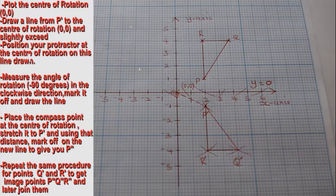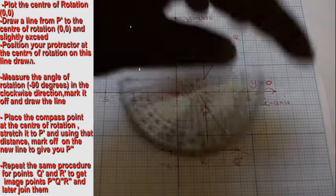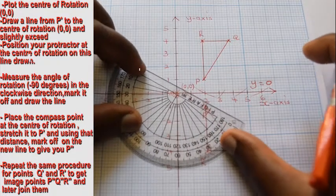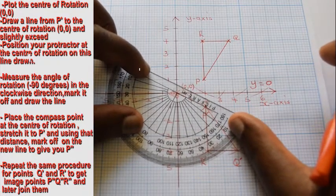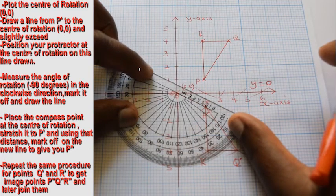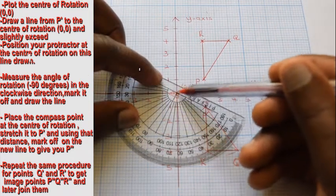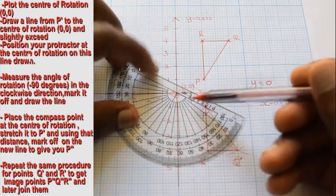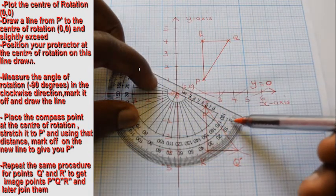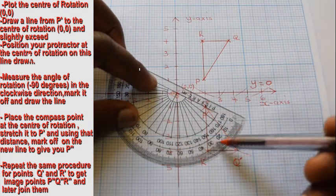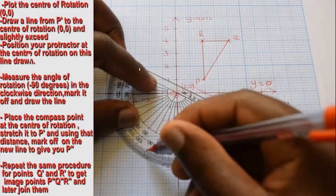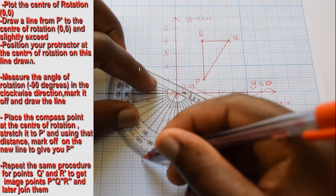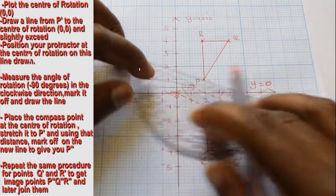Place your protractor appropriately at the center of rotation along this line so as to measure 90 degrees in the clockwise direction. Measure the angle and remove the protractor. Trace out the line showing the measured angle.